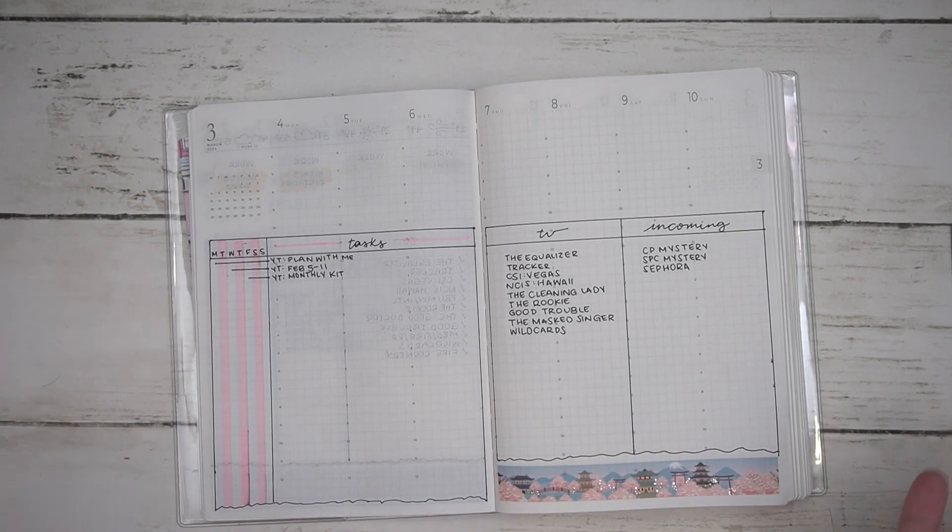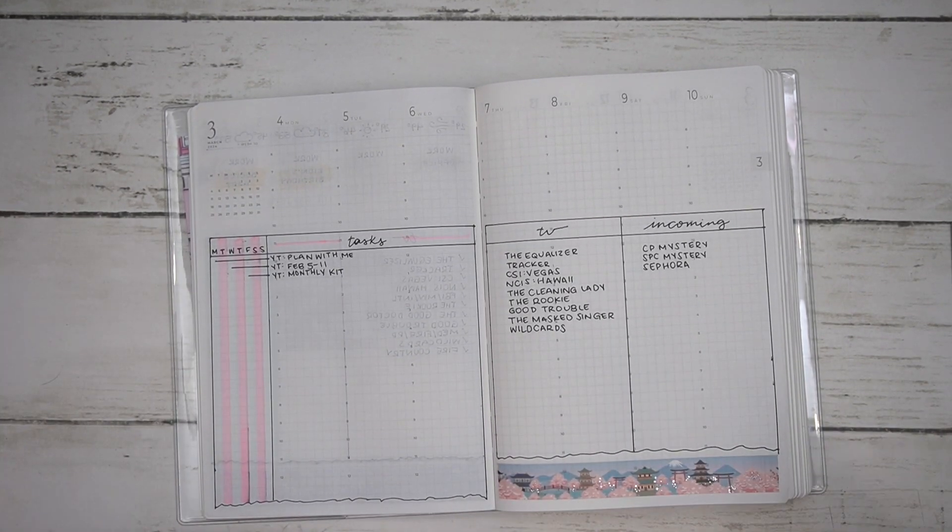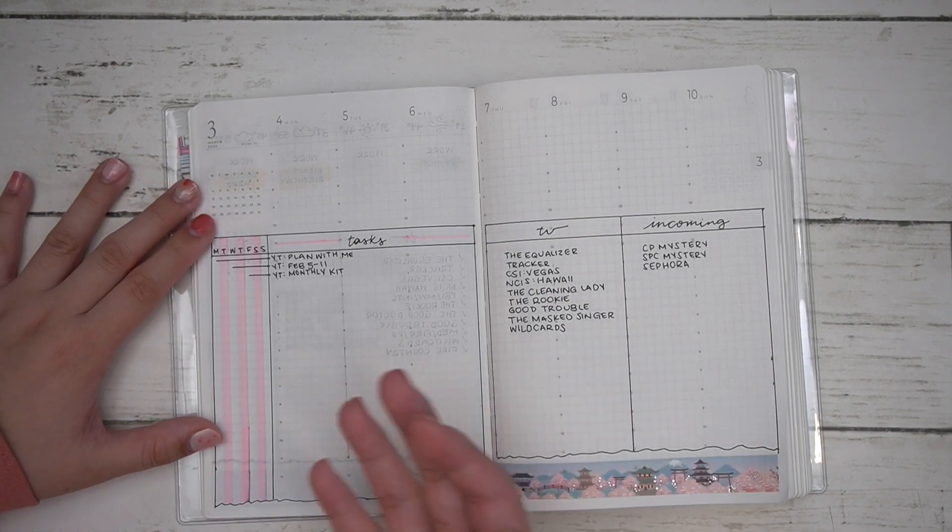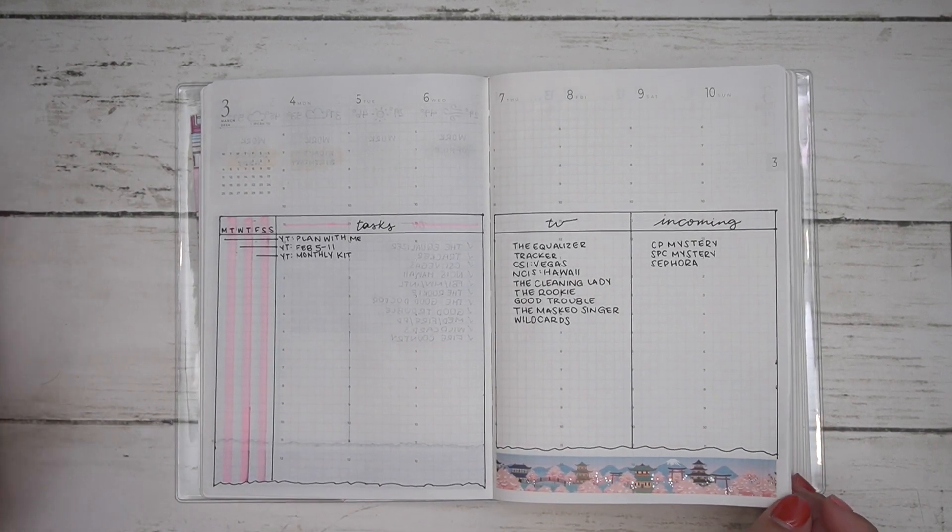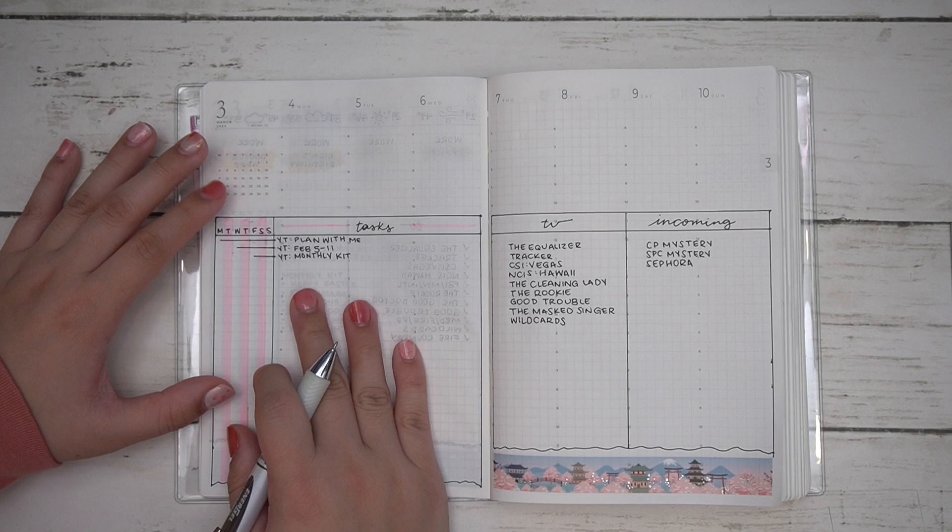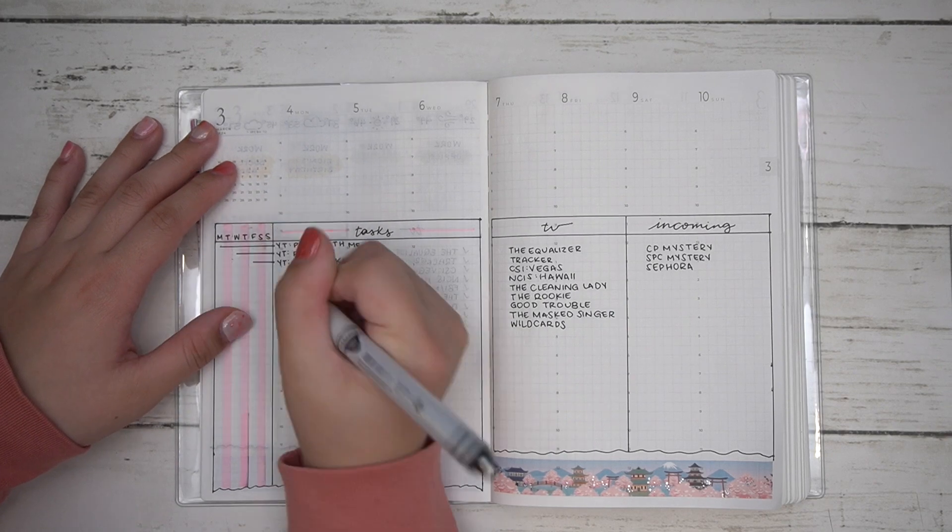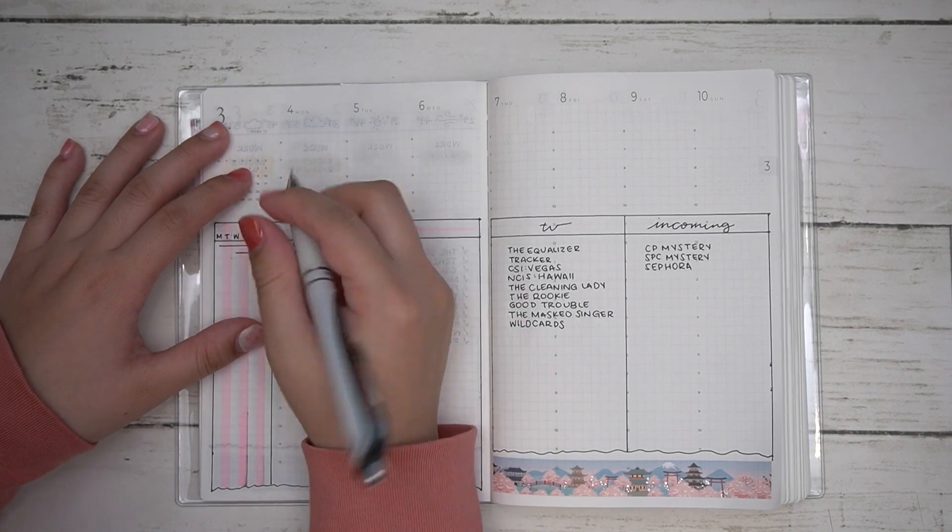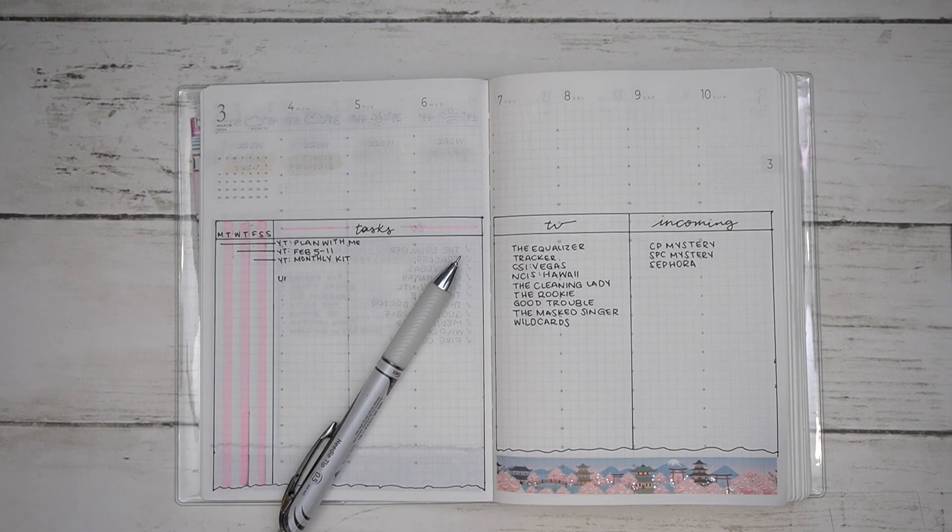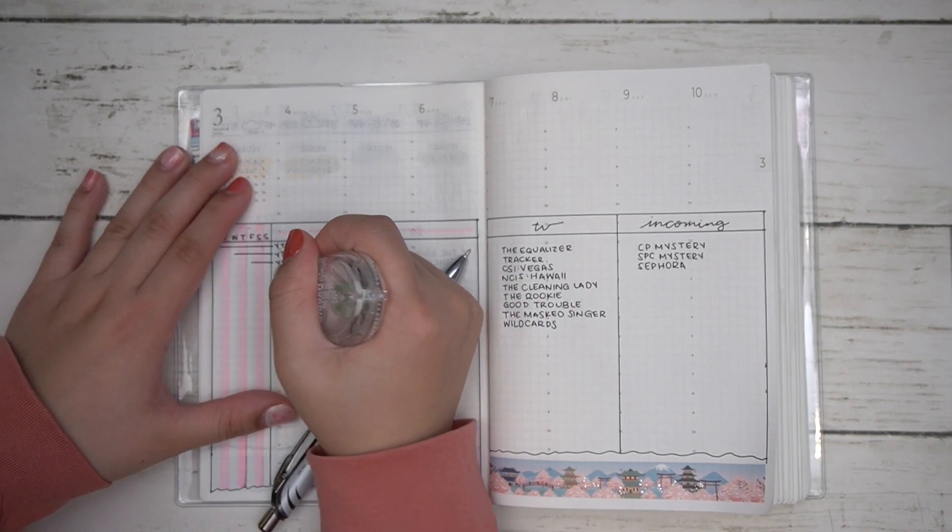In the taskbar area I write down my YouTube videos that I'm hoping will be publishing. Obviously this is the plan with me, and I have my memory spread that is ready to go and publish. Friday's video is a maybe for the monthly kits, but we shall see.